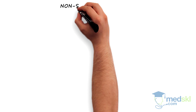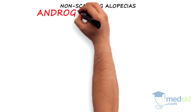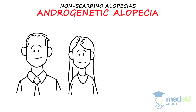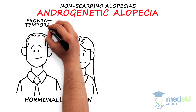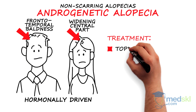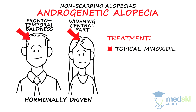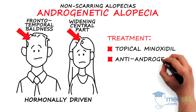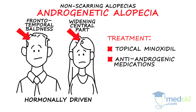The main subtypes of non-scarring alopecias to be aware of are as follows. Androgenetic alopecia is hormonally driven and presents with patterned hair loss. Topical minoxidil, anti-androgenic medications, and hair transplantation are typical treatments.